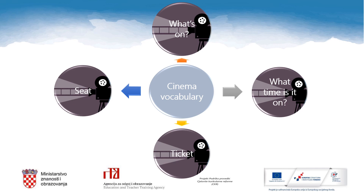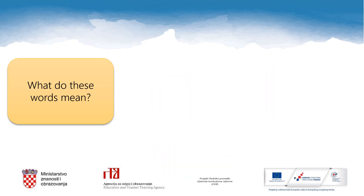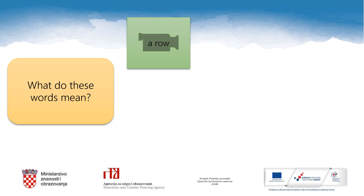Here you can find some words and phrases related to the cinema. When you ask 'what's on?' it is the same question as which film can you watch at the cinema? 'What time is it on?' asks about the time when the film starts. You need to buy a ticket to watch a film there, and there is always a number of your seat on the ticket, meaning the place where you need to sit at the cinema. Let's check other words connected with the topic of the cinema.